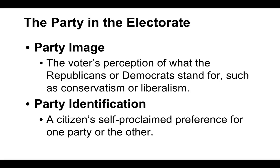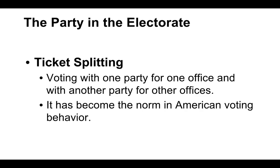Ticket splitting is when you go into a ballot and you vote for one party for one office and another party for other offices. This has become normal in American society. Someone will go in and vote for, say, Donald Trump at the top of the ticket for president, but vote for Richard Neal as their congressman because they feel like he's doing a great job. Back in the day, many people used to just see the R or the D and vote for those people. That's not how it is anymore — people split their votes.